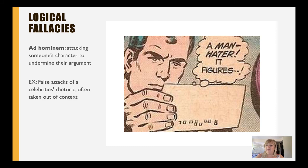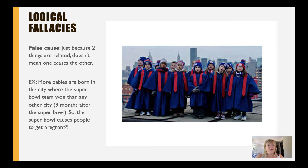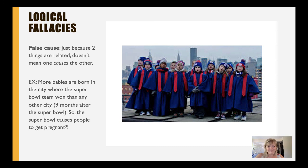What about ad hominem, which any exposure to the media would showcase? Ad hominem is simply attacking someone's character in order to undermine their argument — think of false attacks made towards celebrities that are often taken out of context. What about false cause? This is where just because two things are related doesn't mean one causes another to occur. For example, more babies are born every year in the city where the Super Bowl team won. Of course, nine months later. We could suggest the Super Bowl makes people pregnant — of course not. The Super Bowl doesn't cause pregnancy, but they are in fact related.